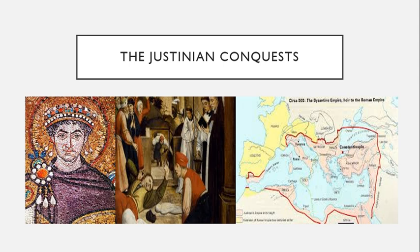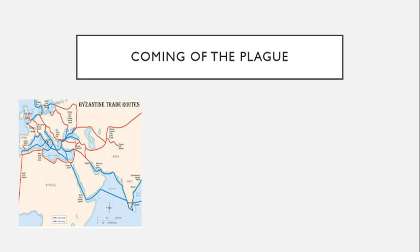This disease likely originated in China or northeast India, then made its way west on the trade routes that crisscrossed the Indian Ocean. Eventually, it made its way to the East African coast, where the East Romans maintained trade routes that stretched as far south as modern-day Tanzania. Justinian also had several provinces in North Africa that served as the breadbasket of his empire. Egypt and modern-day Libya sent carts and ships filled with grain, olive oil, ivory, papyrus, and slaves not only to Constantinople, but to all the great cities in the East Roman Empire.